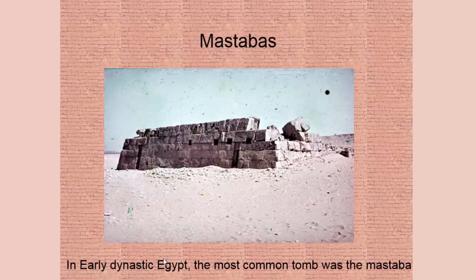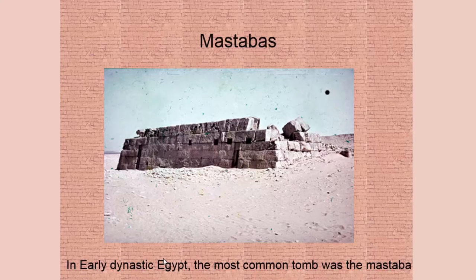This is a mastaba, and it is in a necropolis — a city of the dead. There would be a Ka statue inside, though I'm not sure if this particular one has been looted. If you go to Egypt you can see lots of these ruins; they almost look like little brick buildings or foundations. This is the most common tomb.